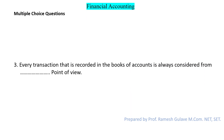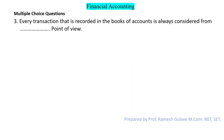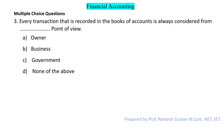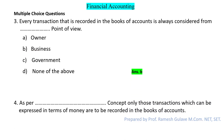The next question says: every transaction recorded in the books of account is always considered from dash point of view. In accounting, we have to consider every transaction from the business point of view. So here option B is the right answer.